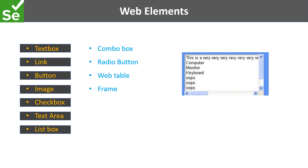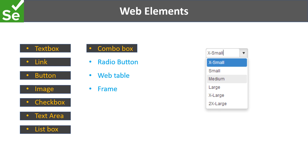So far we have talked about text boxes, links with hyperlinks for navigation, checkboxes, text areas, and list boxes. We are yet to cover four different types: combo box, radio button, web table, and frames. Combo box is very similar to list boxes — they have a similar purpose, but it appears like a simple text box with an arrow on the right side. When you click on it, only then it expands and shows you all the options. That is the difference between combo box and list box — list box appears already open, while combo box opens elements only when you click that arrow.